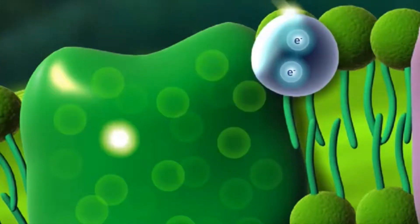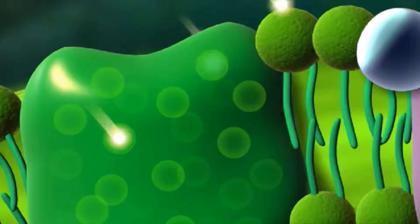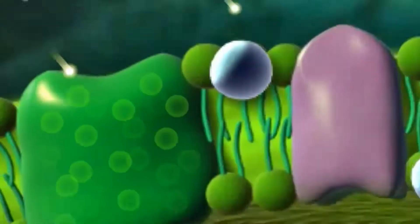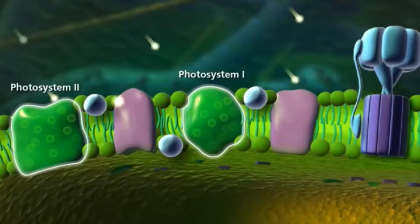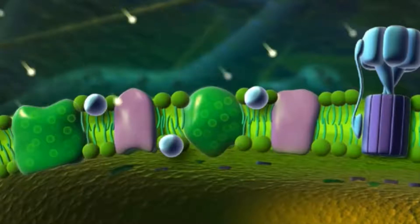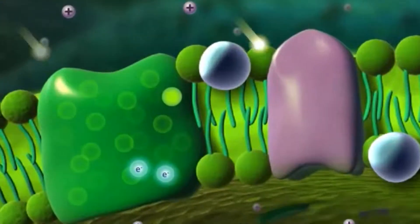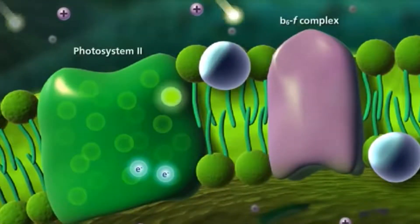Once at the reaction center, the electron creates a permanently separated charge that is essentially energy that can be stored. It's the same thing that makes a fully charged battery such a useful source of power. At that point, the energy is safe and properly stored, ready for use by the plant.